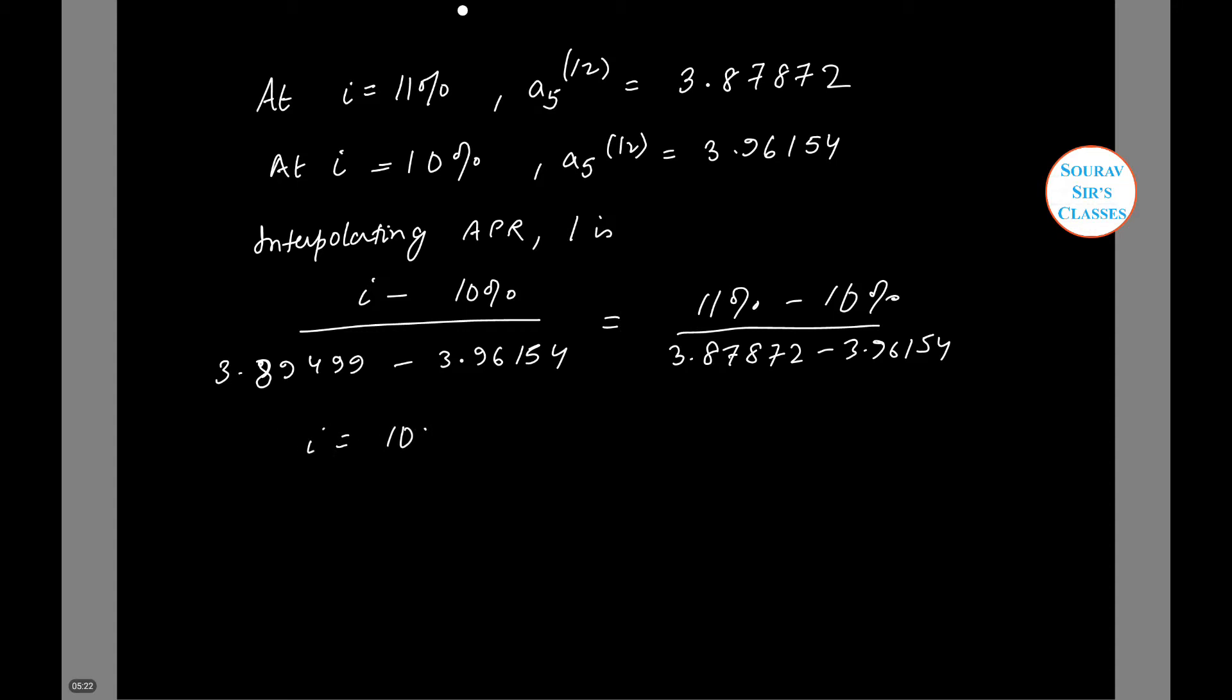i becomes 10.8%. At i equals 10.8%, 12 times 427.90 A5 will be 20,000.2 and at i equals 10.9%, 12 times 427.90 A5 gives us a value 19,958.3.